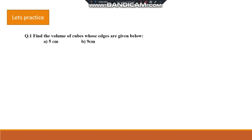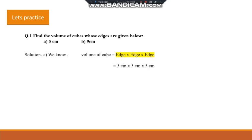Let's practice. Question number 1: find the volume of cubes whose edges are given. There are two questions — first edge is 5 centimeter and second is 9 centimeter. We know the formula for volume of cube is edge × edge × edge. Substituting edge = 5 cm: 5 × 5 × 5 = 125 cubic centimeter. Volume of first question is 125 cubic centimeter, since dimensions are given in centimeter.